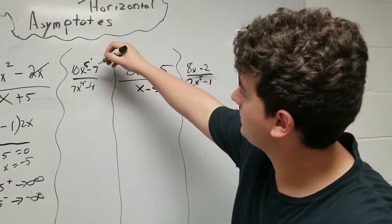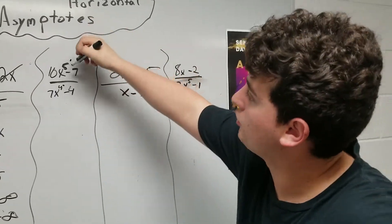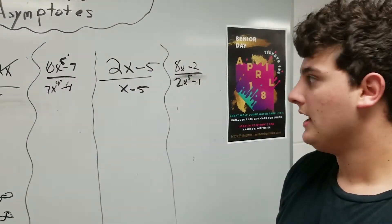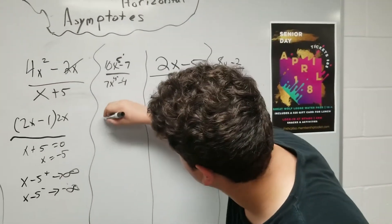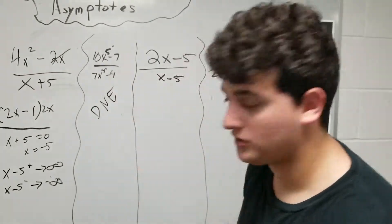Here I see that it's top-heavy because the exponential number is greater on the top than on the bottom. Since it's top-heavy, the limit does not exist. You can just stop from there.